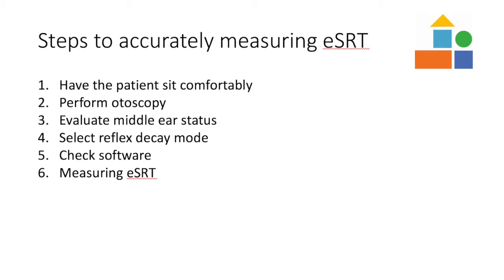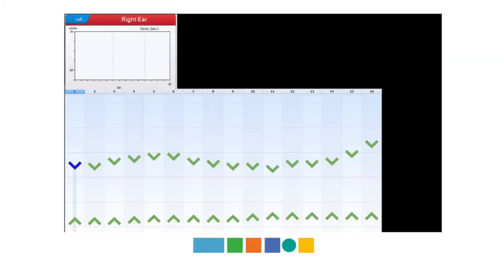If a response is observed on the first presentation, decrease your M level and present again. Continue to decrease the M level until a response is not observed. Once a response is no longer observed, increase the M level until a response is once again observed. Here is an example of a response being observed on the first presentation, the clinician decreasing the M level and presenting again, and the M level being increased until the response is observed again.